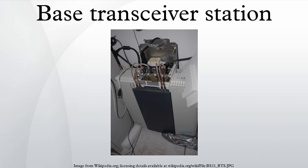The power amplifier amplifies the signal from the TRX for transmission through the antenna, and may be integrated with the TRX. The combiner combines feeds from several TRXs so that they can be sent out through a single antenna, allowing for a reduction in the number of antennas used. The duplexer is used for separating sending and receiving signals to and from the antenna, enabling sending and receiving through the same antenna ports.